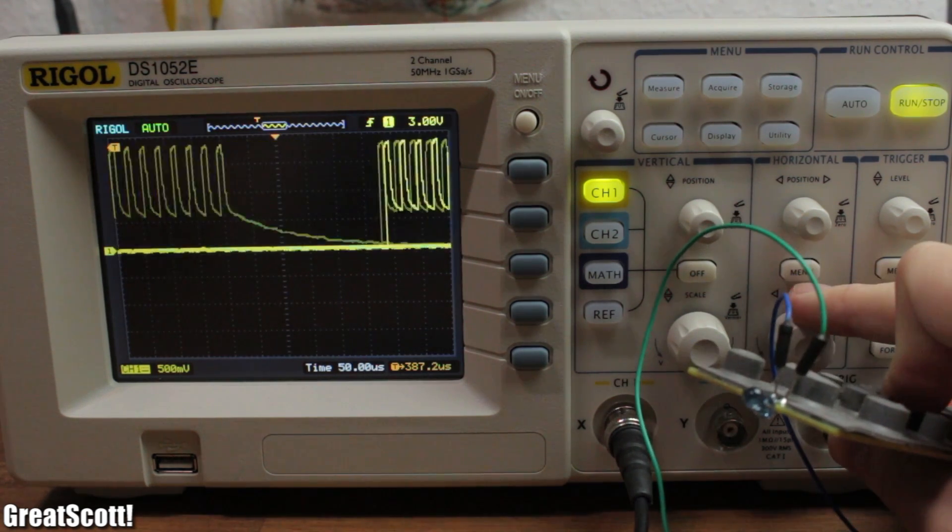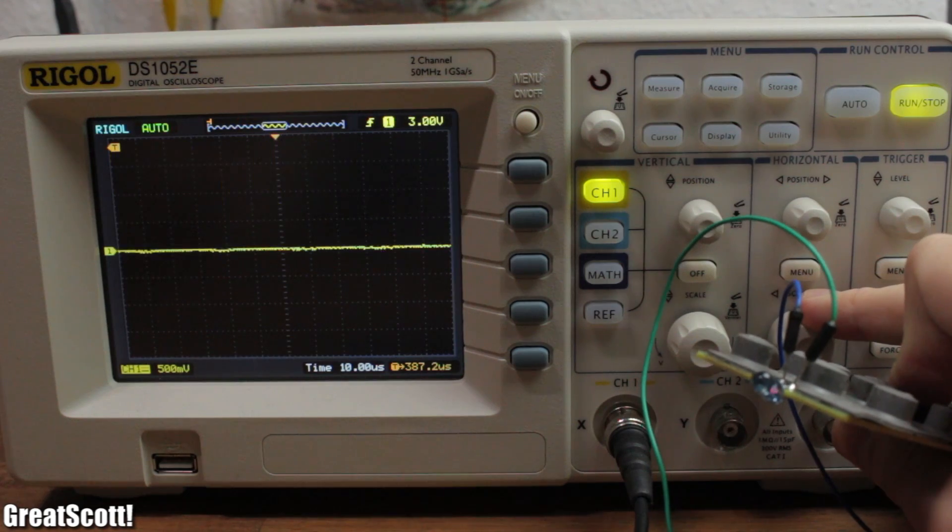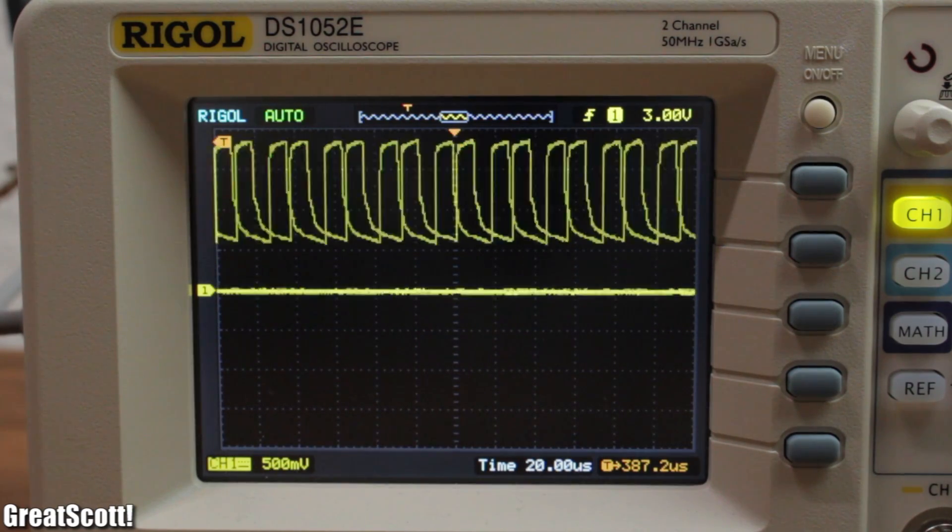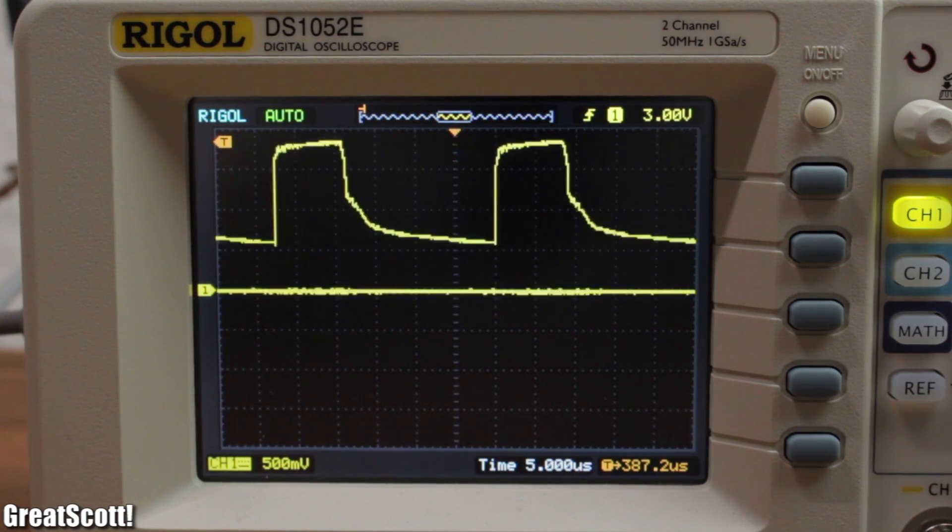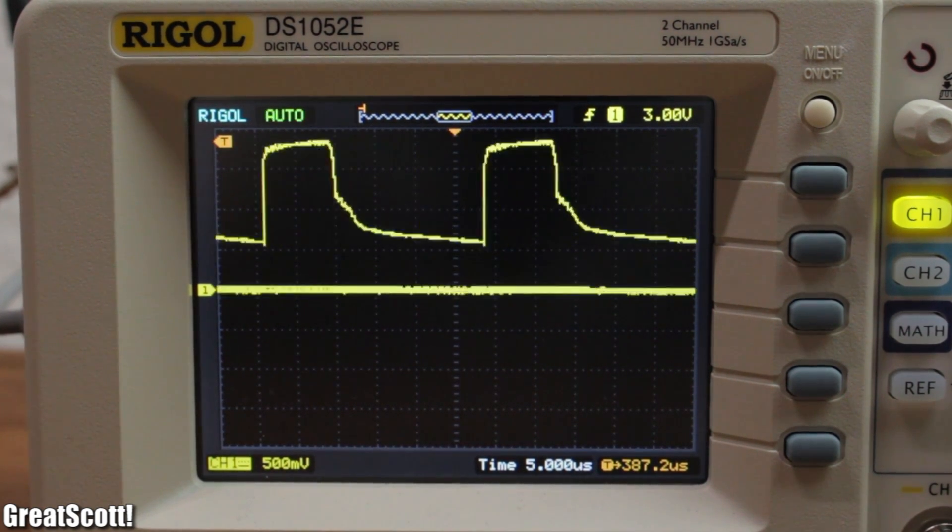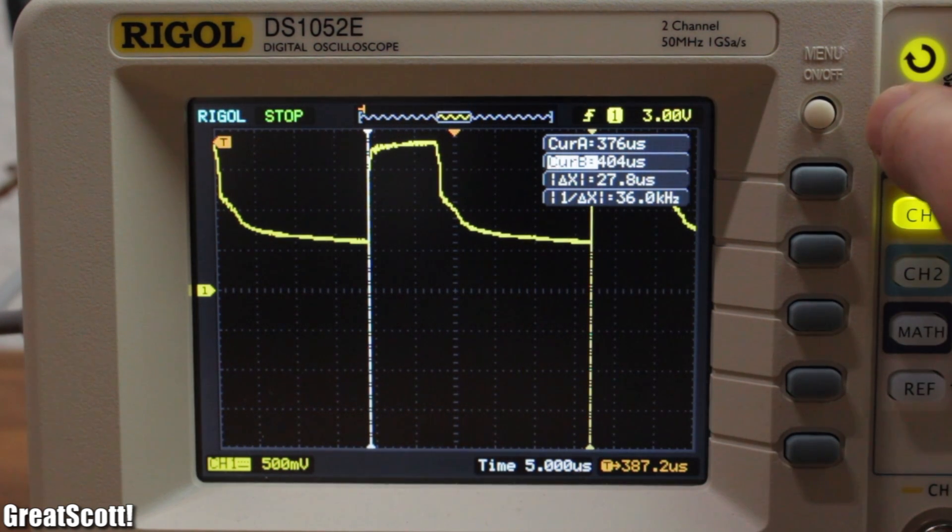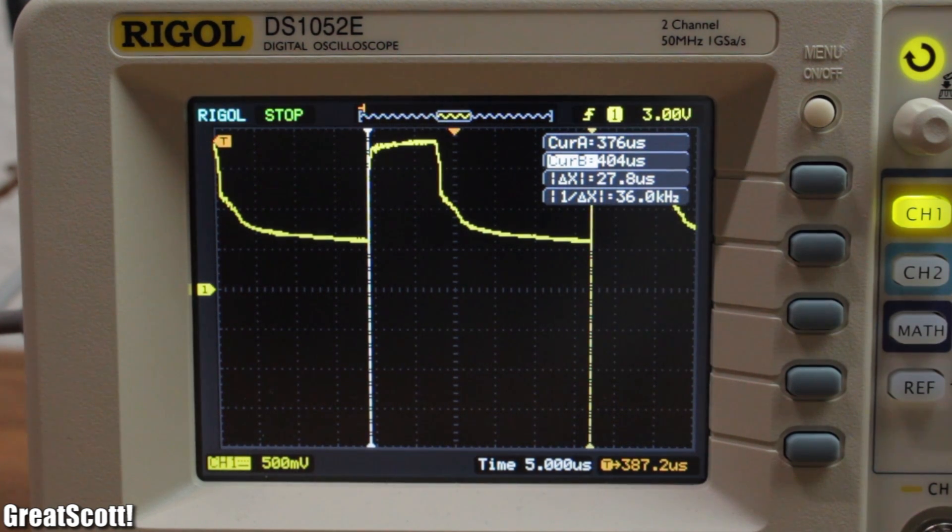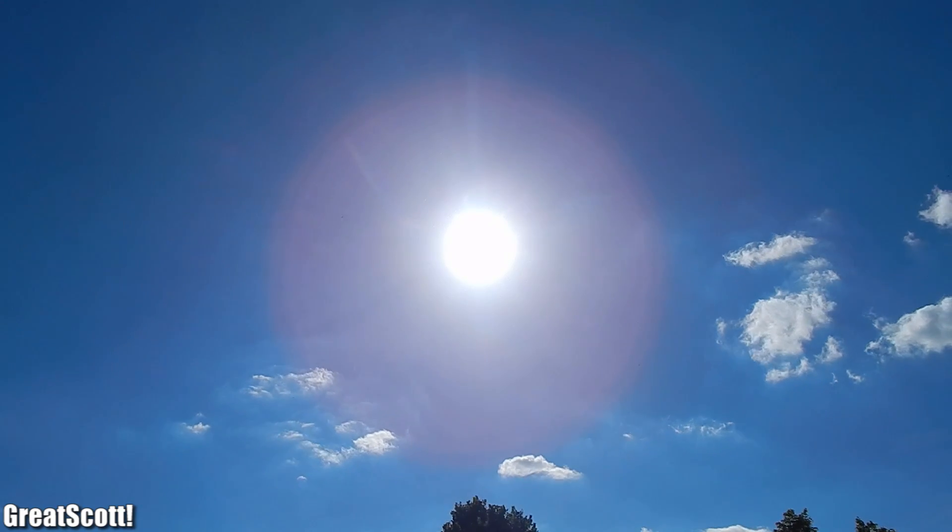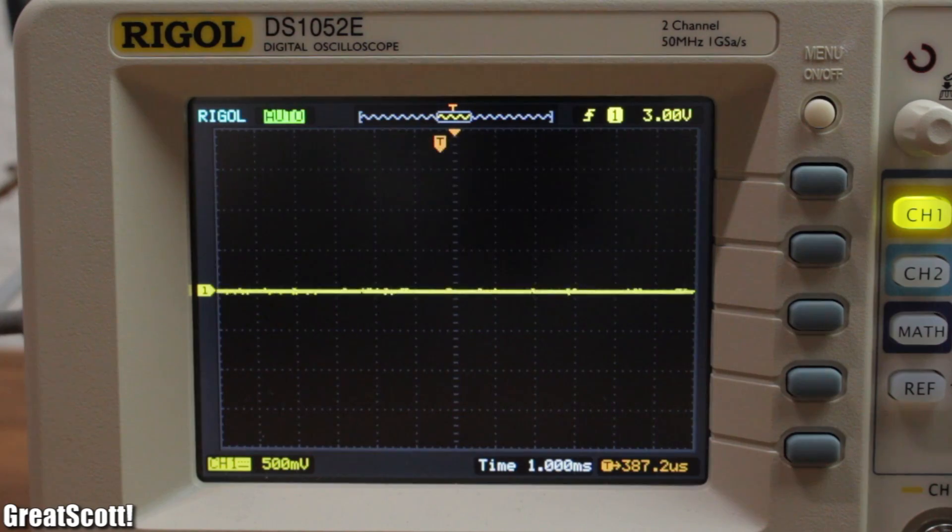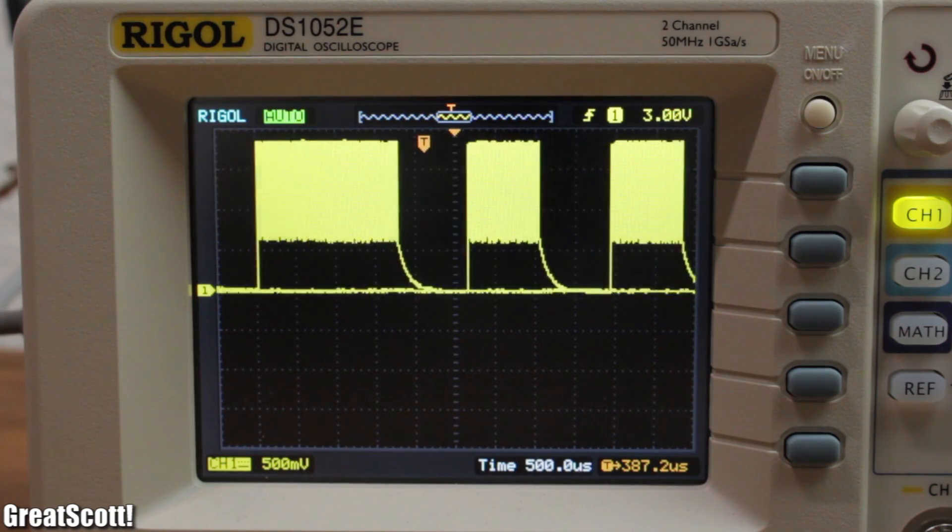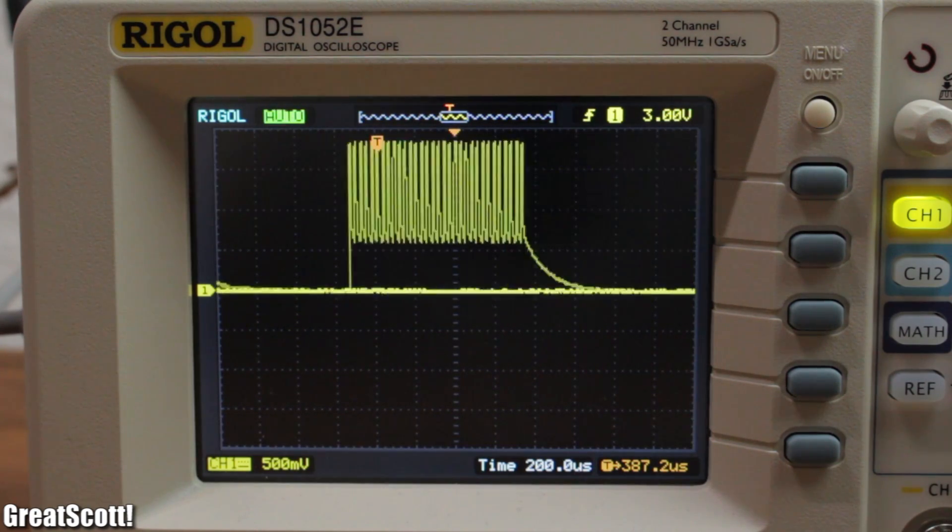But something seems weird. Let's zoom in a bit. And we can see here that the voltage is not constantly high in those bursts. It turns on and off with a frequency of 36 kHz, which is also called the carrier frequency. But why this, you may ask? Well, it's simple. Infrared light is not rare. It's everywhere. The sun produces it and all kinds of other light sources as well. That is why we have to make our signal special, so that we can distinguish it from all this other IR light.